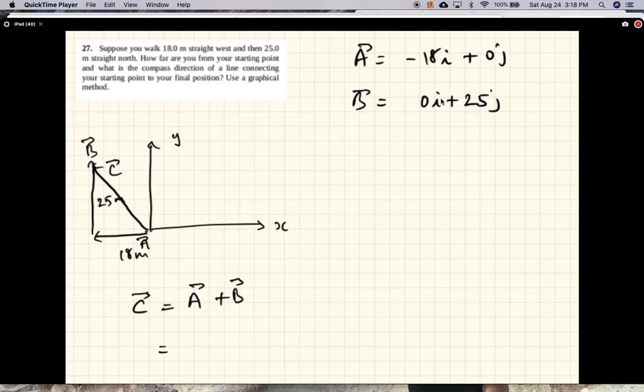So A plus B is minus 18i plus 0j plus 0i plus 25j, which equals minus 18i plus 25j.